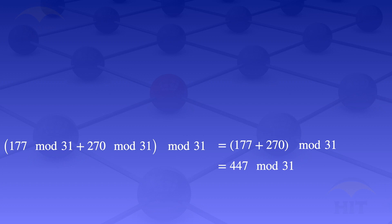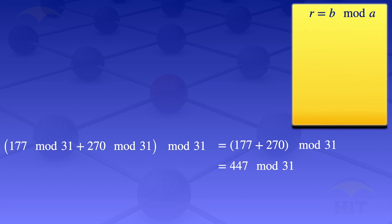We can find the remainder using the division algorithm, which says the remainder is b minus aq, where q is the quotient, obtained by finding the floor value of b divided by a.